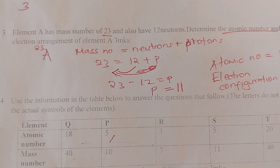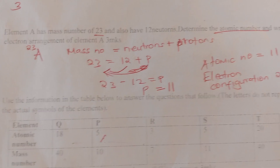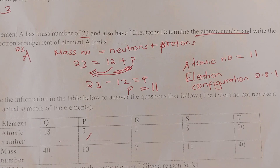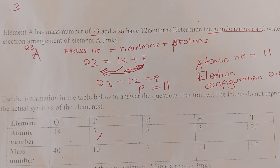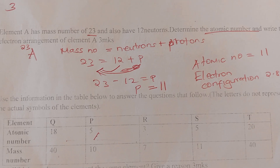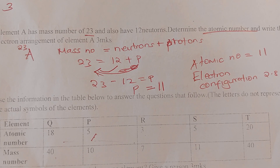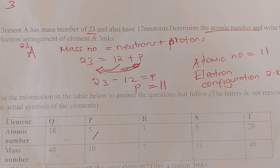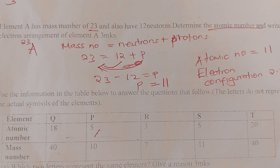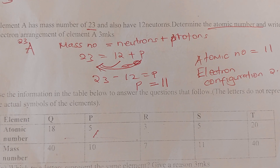An element has a mass number of 23 and also 12 neutrons. Determine the atomic number and write the electron arrangement of element A. If the mass number is 23 and it has 12 neutrons, to find the proton number you take mass number minus the number of neutrons, and you get 11.